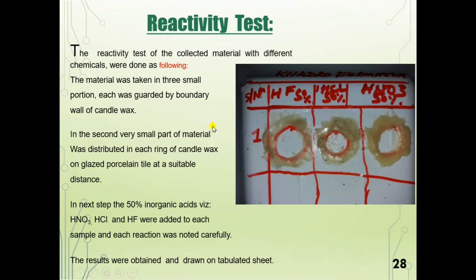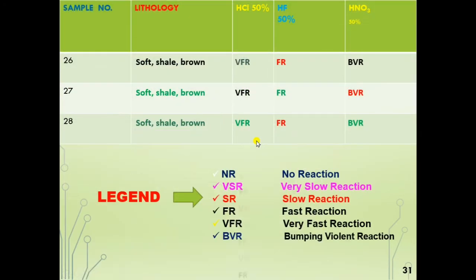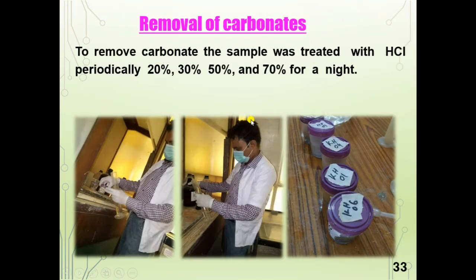This is the reactivity test — to know the rate of reaction, we performed the reactivity test. This slide shows the result of the reactivity test. For maceration, we used hydrochloric acid, hydrofluoric acid, and nitric acid to remove minerals such as carbonates, silicates, and pyrites. Carbonates were removed using hydrochloric acid periodically at 20%, 30%, 50%, and 70% concentration overnight.